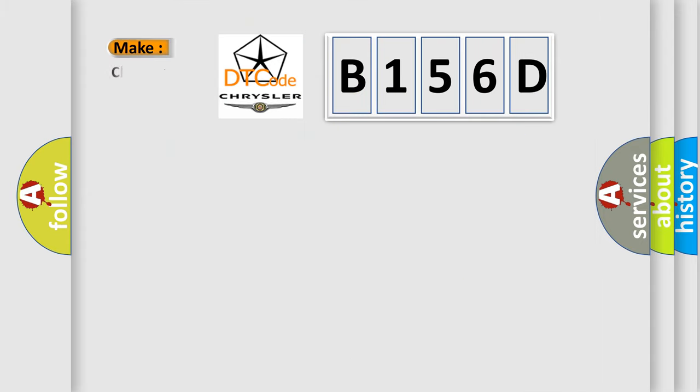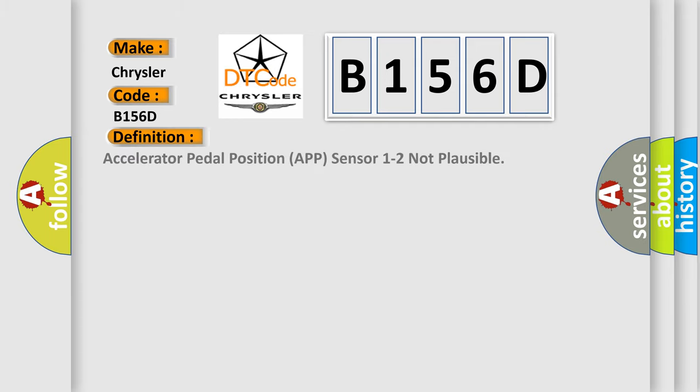So, what does the diagnostic trouble code B156D interpret specifically for Chrysler car manufacturers? The basic definition is: Accelerator Pedal Position APT sensor 1 to 2 not plausible.